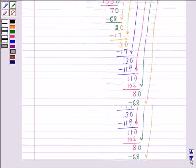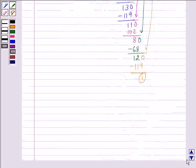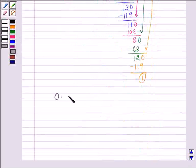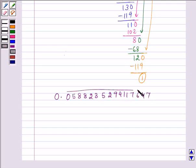So the answer comes out to be 0.0588235294117647 with a bar over the repeating digits.